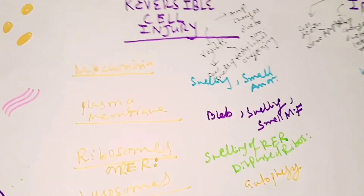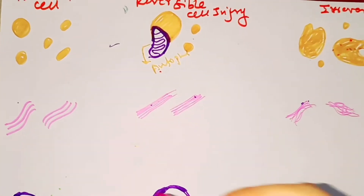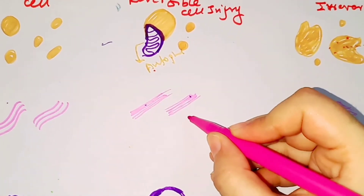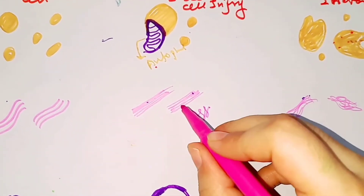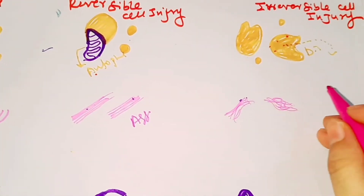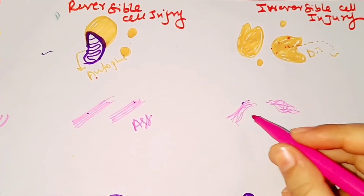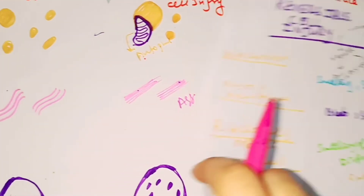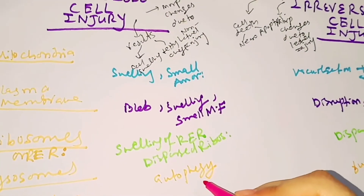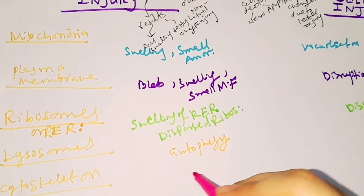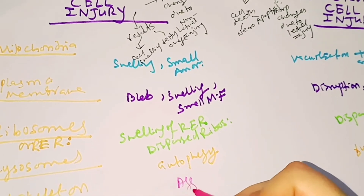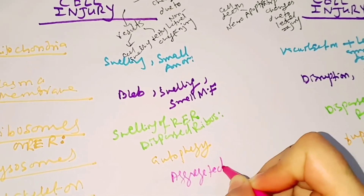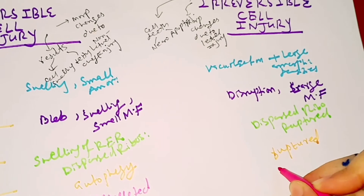After lysosomes, the next organelle is the cytoskeleton. The cytoskeleton is normal in the normal cell. In reversible cell injury, the cytoskeleton will be aggregated, whereas in irreversible cell injury the cytoskeleton is disrupted.